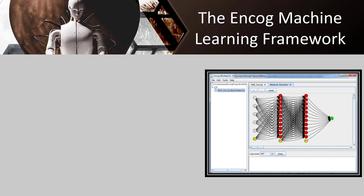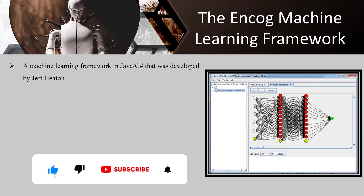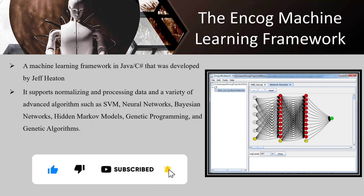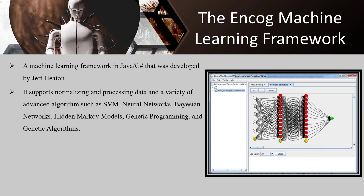The Encog Machine Learning Framework is a Java and C# framework developed by Jeff Heaton, a data scientist. It supports normalizing and processing data and a variety of advanced algorithms such as SVM, neural networks, Bayesian networks, hidden Markov models, genetic programming, and genetic algorithms. It has been actively developed since 2008 and supports multi-threading, which boosts performance on multi-core systems.